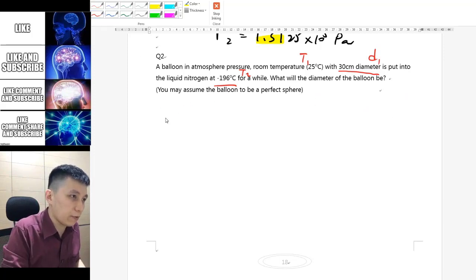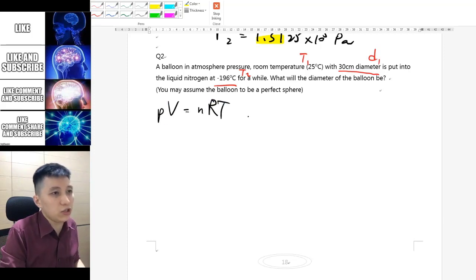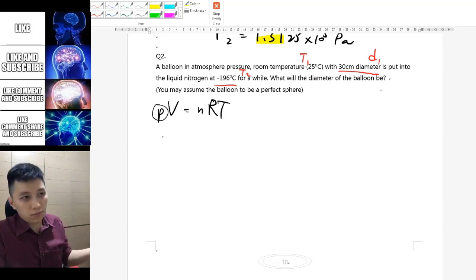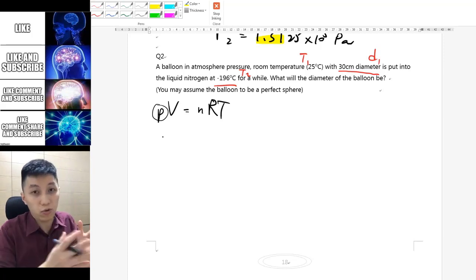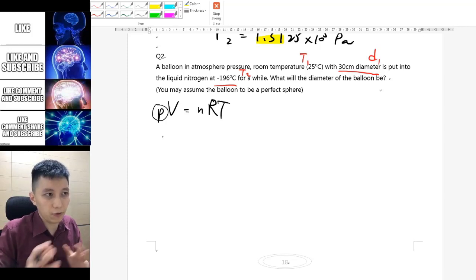What you have to think about first of all is again using the ideal gas law. Now we should have the pressure to be constant because it's always in the atmosphere, so the pressure eventually when you change the volume will balance out with the pressure. That's why the pressure would eventually be the same for both balloons.